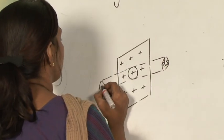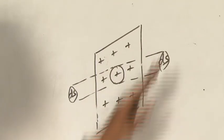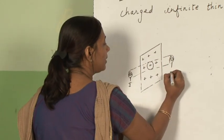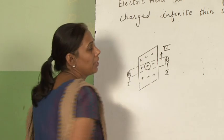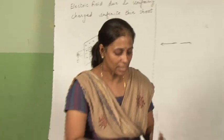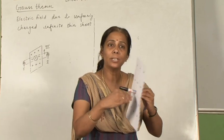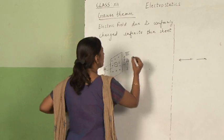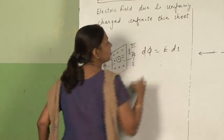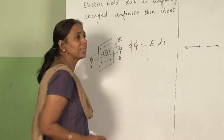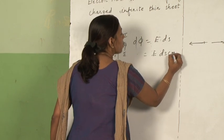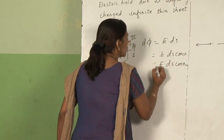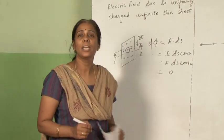Suppose the area is say dS. We can divide the whole Gaussian surface into 3 regions — first, second, and third. The third region is the curved side of the cylinder. What will be the flux linked with it? It will be 0. Why? Because flux is given by E·dS = E dS cosθ. Here θ is 90°, so it becomes E dS cos90° = 0. So in region 3 there will not be any flux.